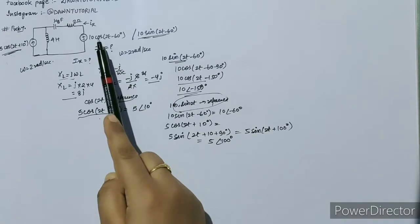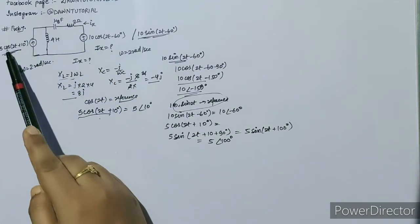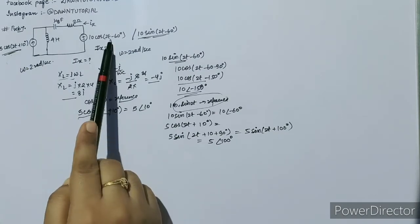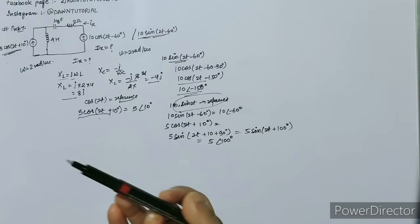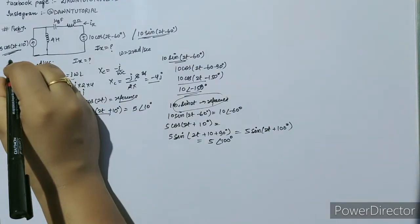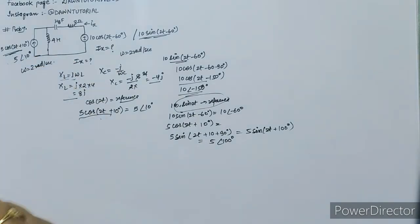Now let us come to the question. What does the question ask? We have to find the value of ix. Here it is cos and there it is cos, so no need to change or take any reference.